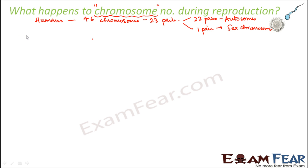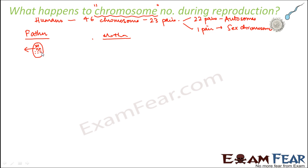For reproduction you need two human beings — one male (the father) and one female (the mother). Inside each and every cell of the father's body there are 46 chromosomes, that is 44 autosomes plus 2 sex chromosomes. Similarly, inside the mother's body each and every cell has 46 chromosomes: 44 autosomes plus 2 sex chromosomes.